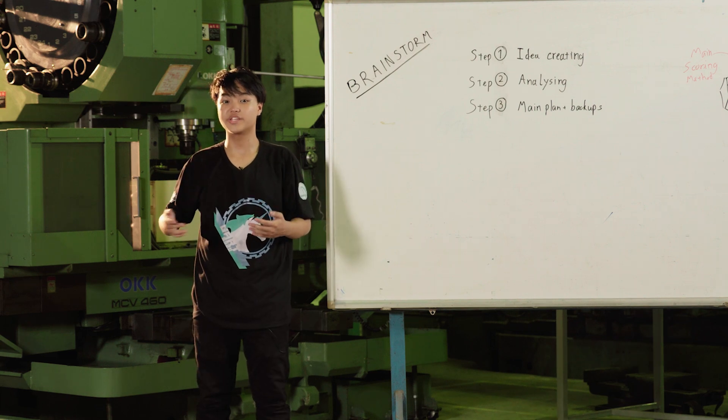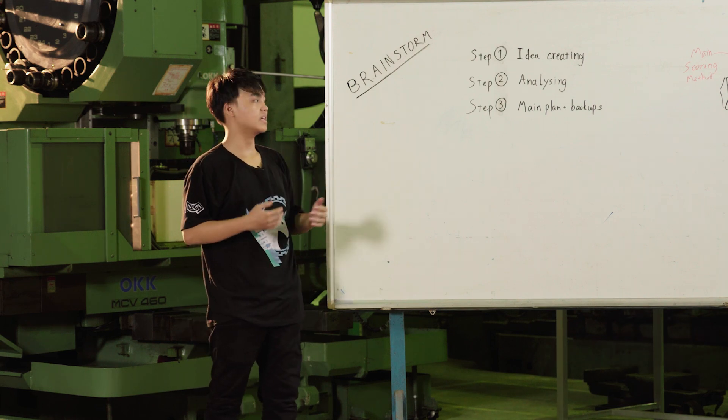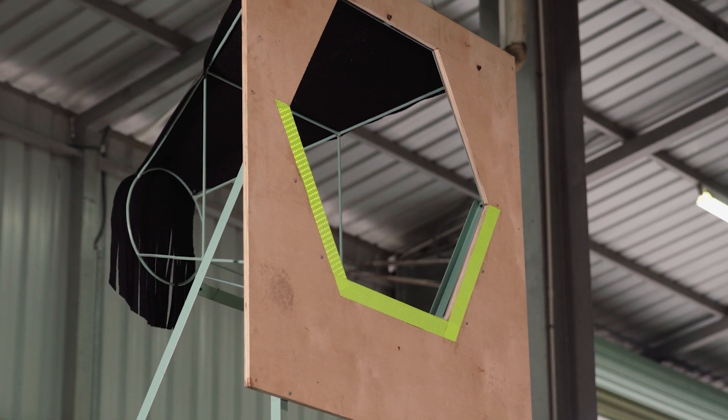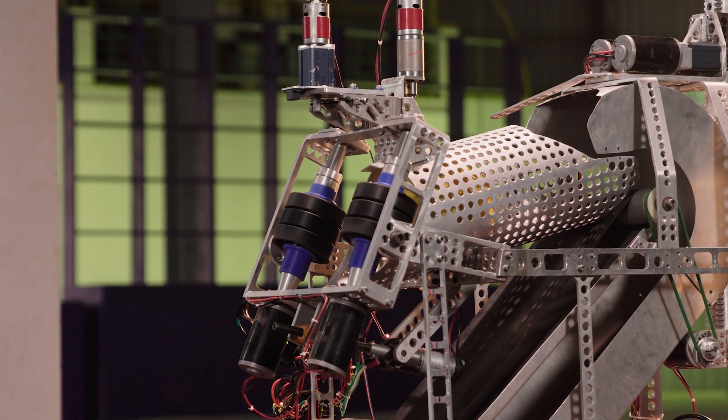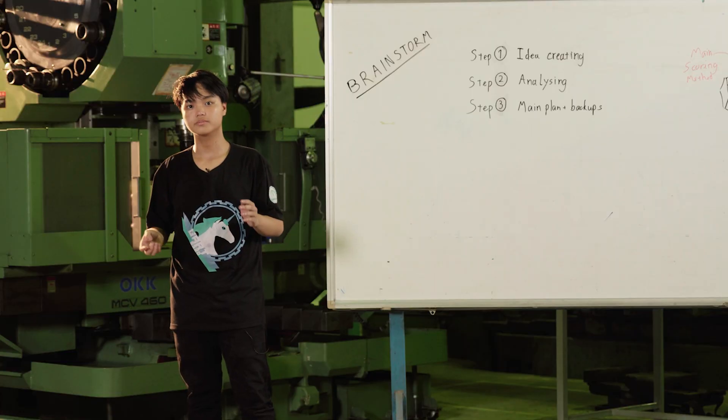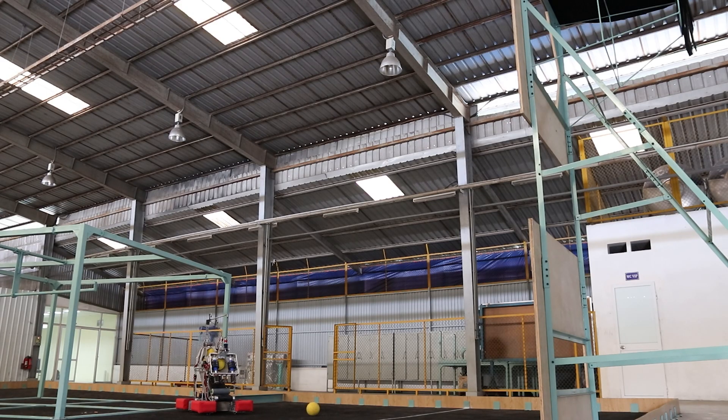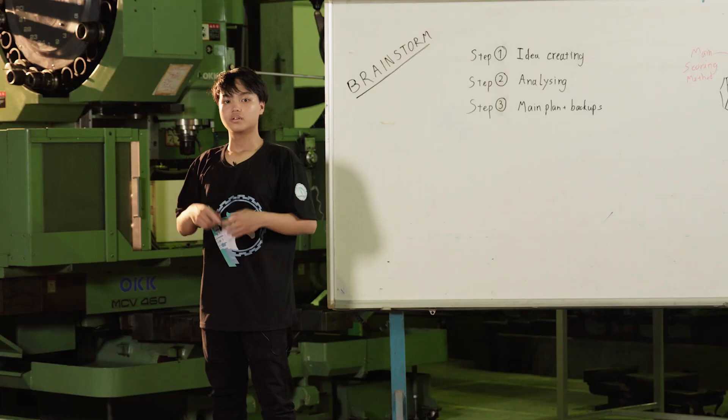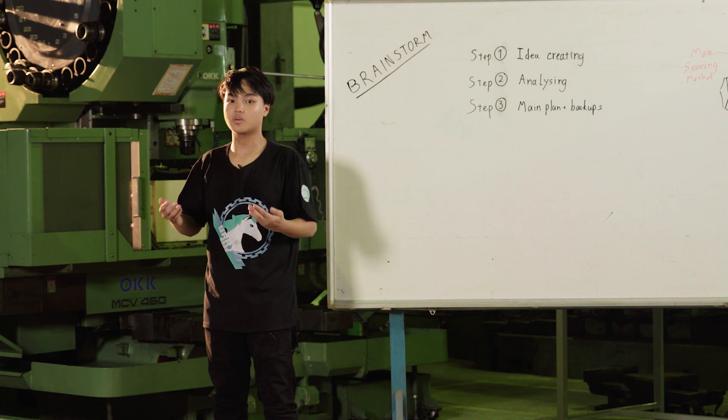This is what we have got researching for the shooting mechanism in the FRC 2020 game. In the FRC 2020 game task, the main scoring method is to shoot as many balls as possible up high. The ball is about 17 cm in diameter. And through researching on Chief Delphi and looking back at older and similar FRC games, we have come up with these ideas. Next up, Thanh will present about his idea.